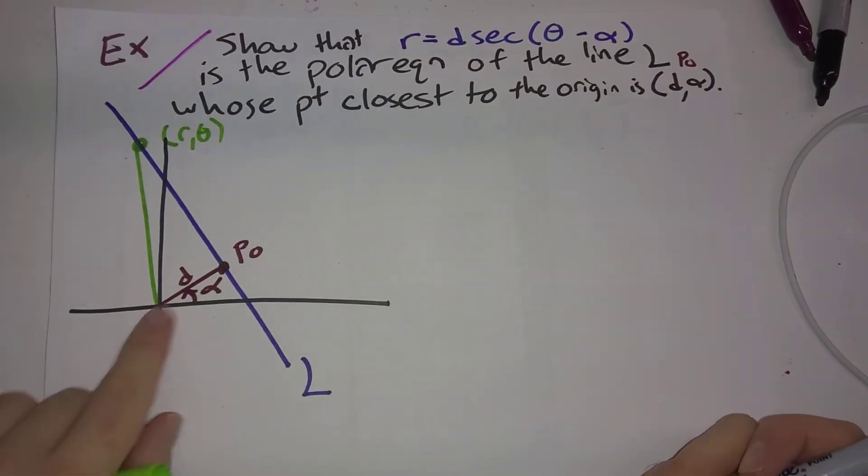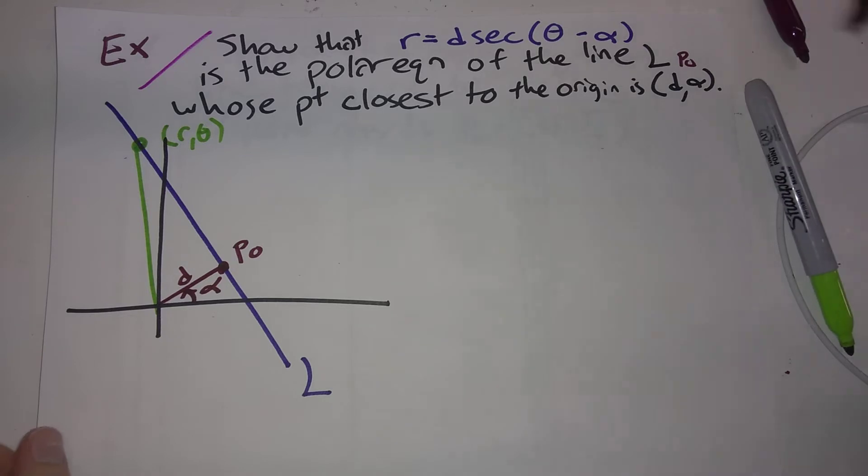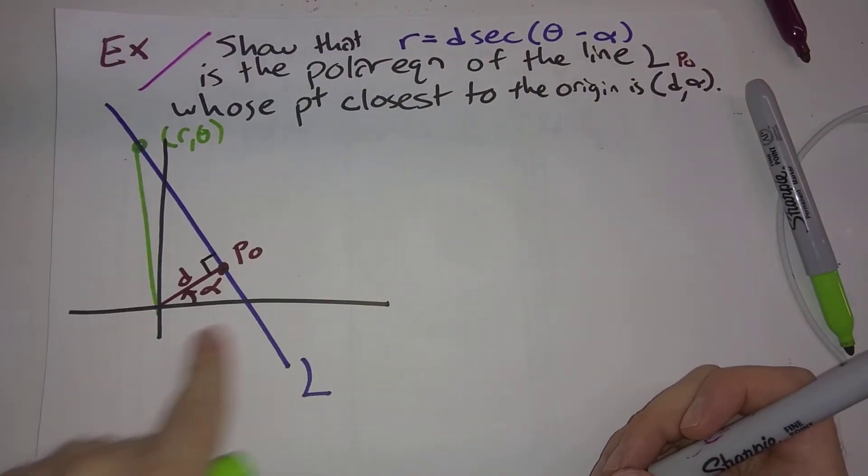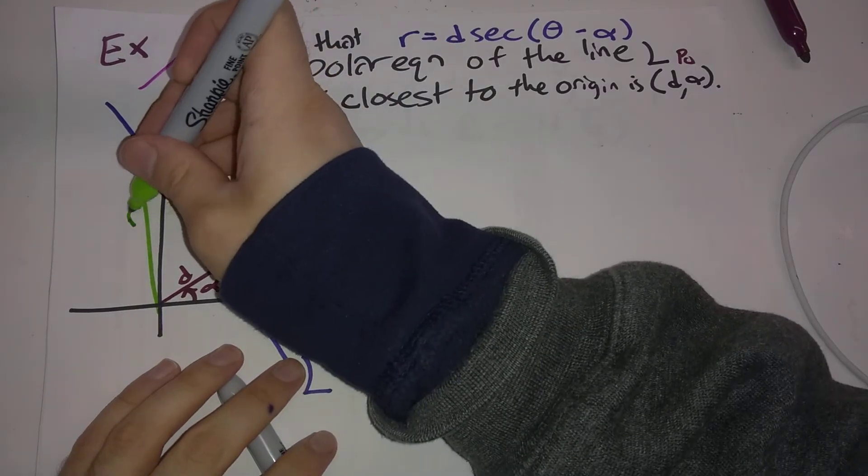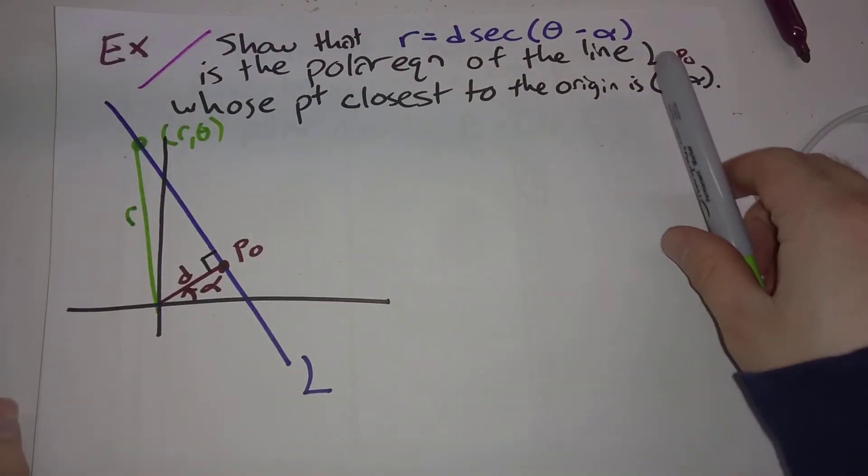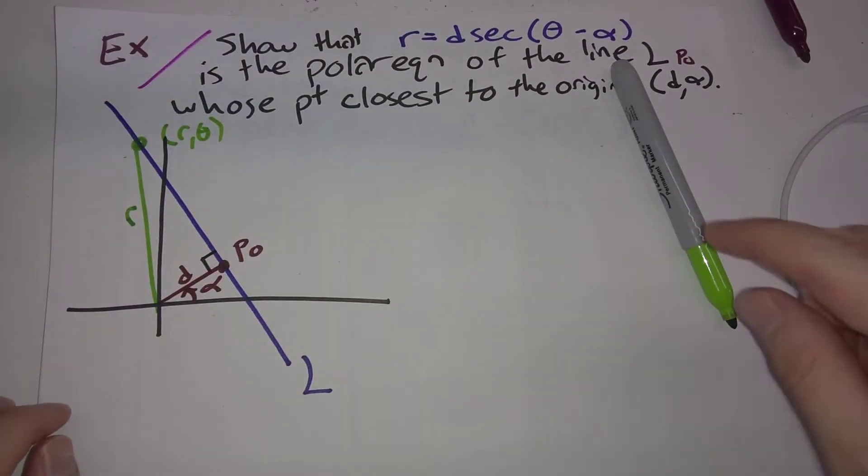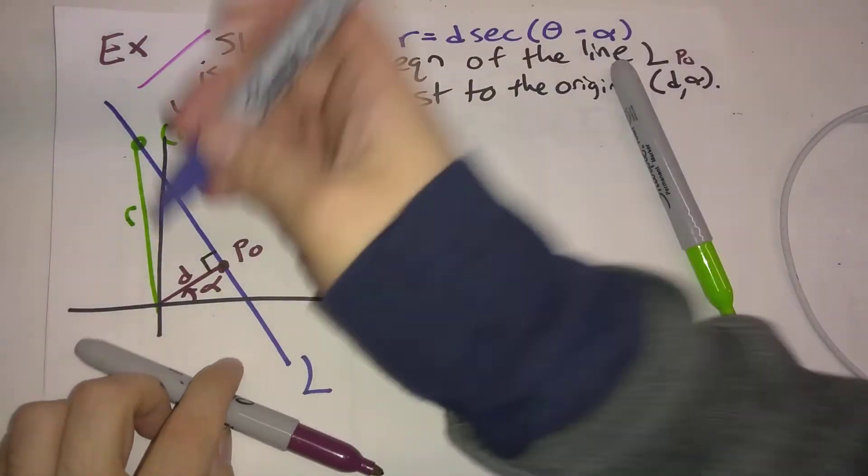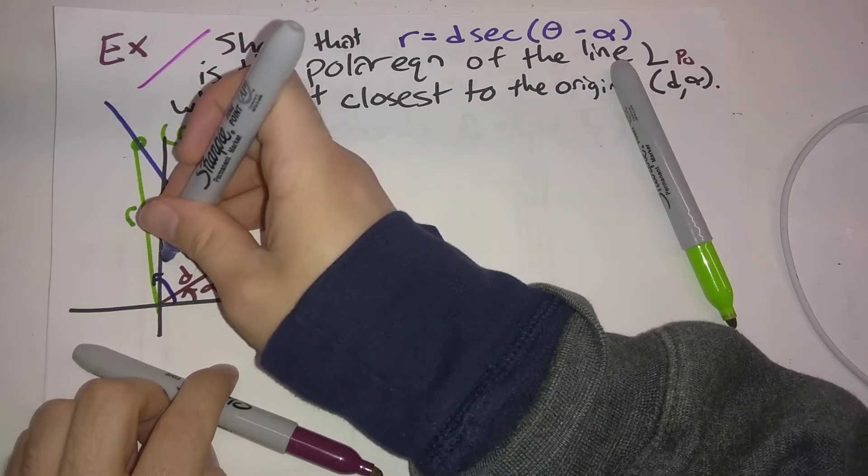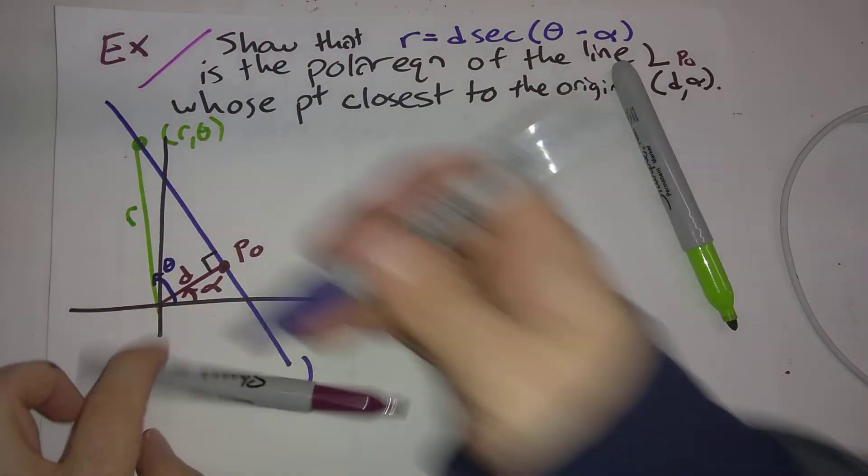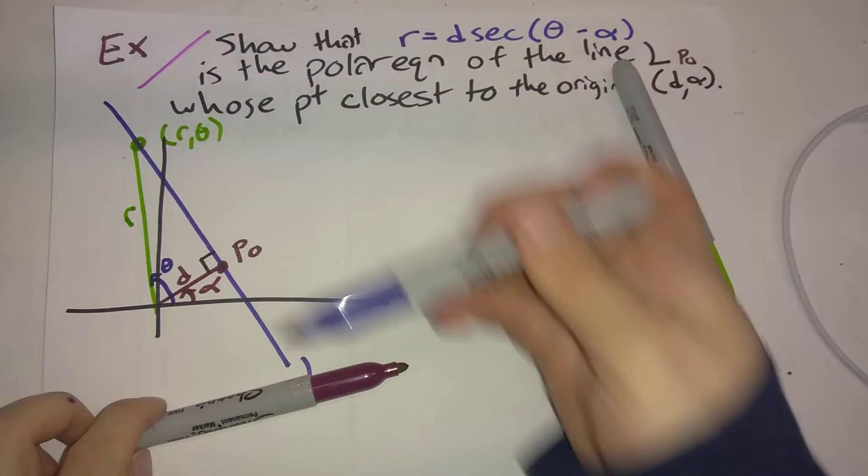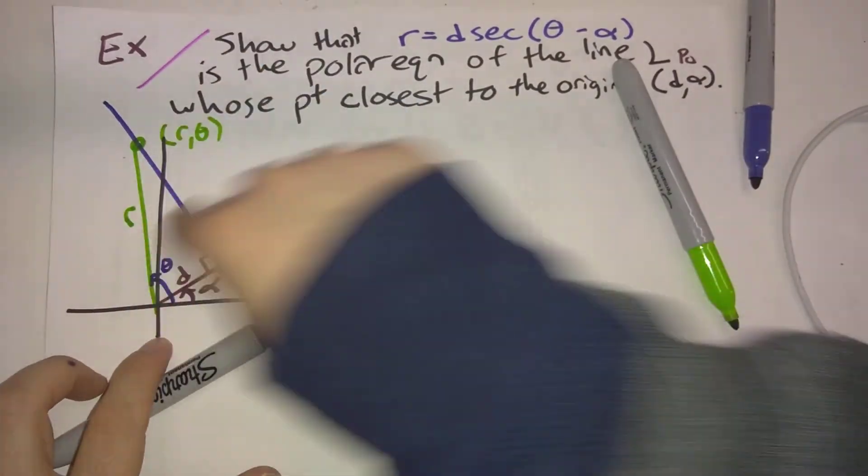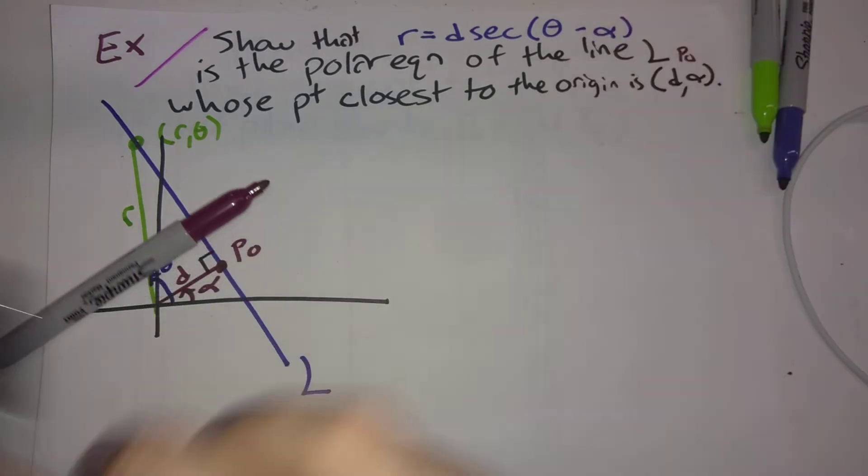And we're going to drop this down. But what's going on here? We have a right triangle. Now this has side length R. And this angle is going to be, let's see, this entire angle is going to be theta. So the angle from here to here is going to be theta minus alpha. So I'm going to pop out this triangle. I'm going to pop it over here.